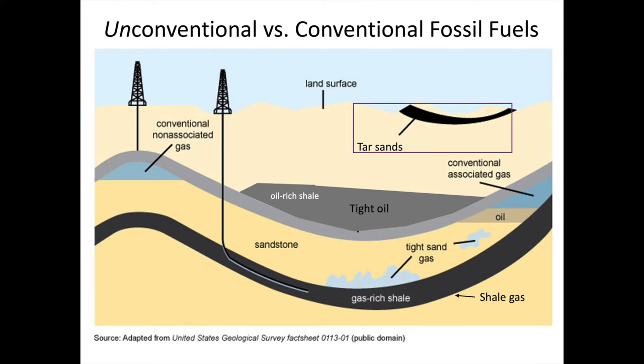Tar sands are another unconventional fossil fuel, but they are a bit different. Here they are migrating upwards, but they don't run into a trap before reaching the land surface. We'll talk about each of these in this lecture.